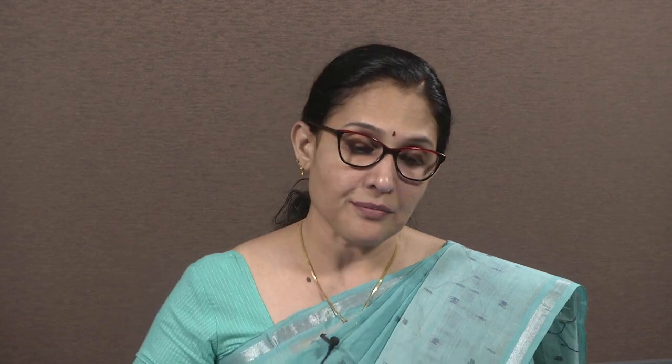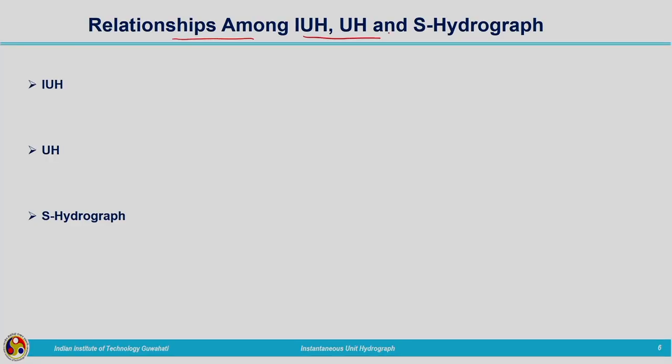The IUH ordinate multiplied by the effective rainfall gives the ordinate of the DRH. So the convolution integral can be utilized for deriving the direct runoff hydrograph at the outlet by using the instantaneous unit hydrograph. Now let us move on to the relationships between the unit hydrograph, instantaneous unit hydrograph, and S hydrograph. We know that by deriving the UH of nD duration — if n is a fraction we use the S hydrograph principle, and if n is an integer we use superposition. All three are responses for different types of inputs: UH for pulse input, IUH for impulse input, and S hydrograph for step input.